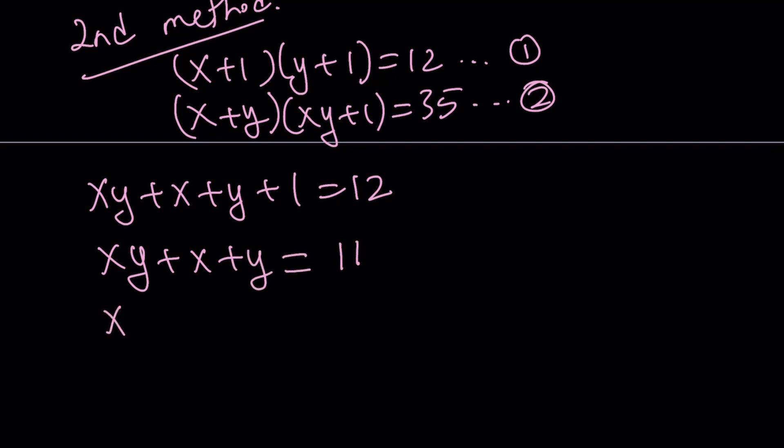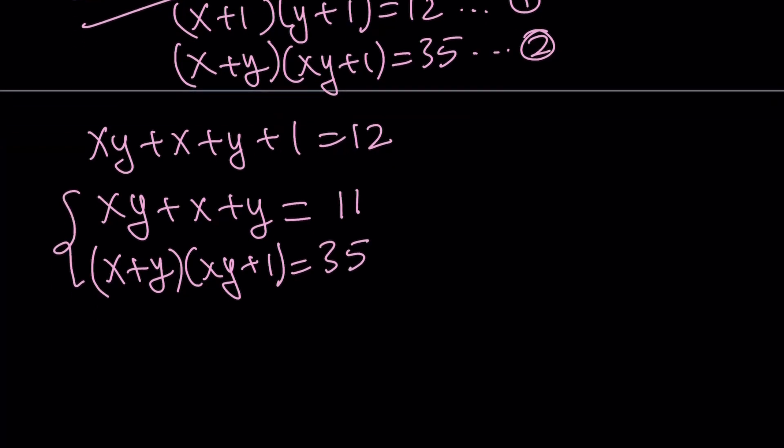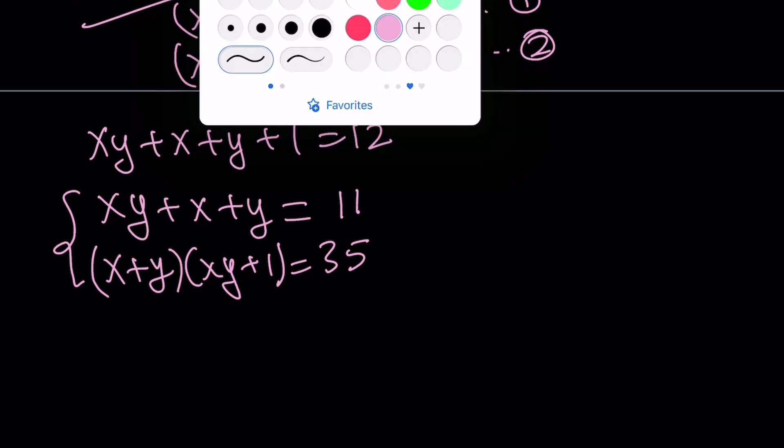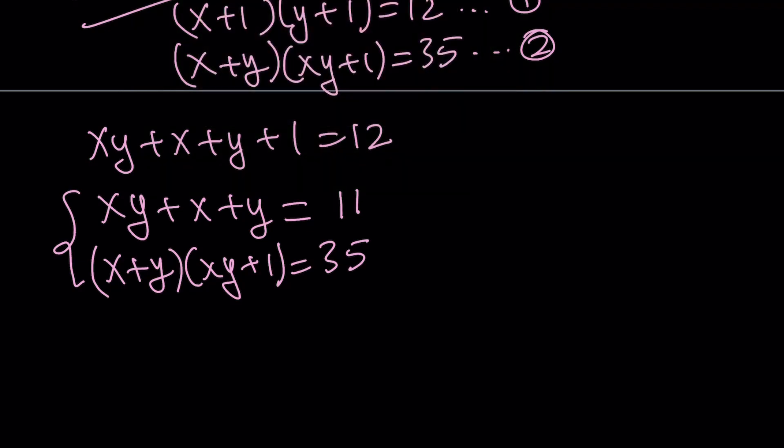I'm going to go ahead and write down the second equation one more time. And then treat this as a system again. But this time, it is a different type of system. It is a system in two variables. And those variables are xy and x+y. Because if I do that, then the solution will be simpler.